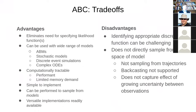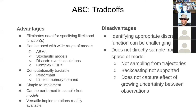What are some advantages and disadvantages? ABC eliminates the need for specifying likelihood functions. It's basically a Bayesian motivation because you can specify prior distributions, and it can be used for a wide range of models. It's computationally quite tractable and quite performant — as long as you're not too picky with the threshold. It has limited memory demand, it's simple to implement. It can be performed to sample from models, not just parameter values — you could try different models and only accept model-parameter combinations that fall within a certain threshold epsilon. Versatile implementations are readily available.